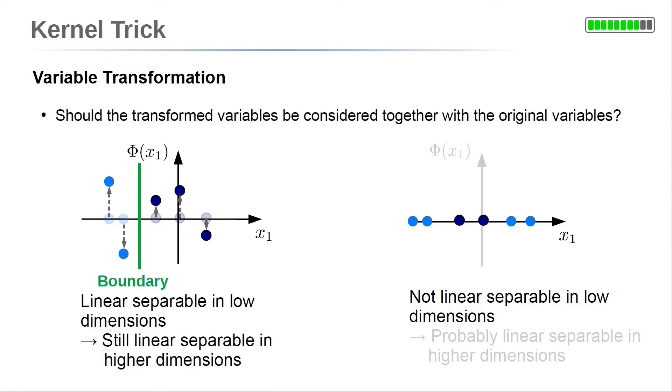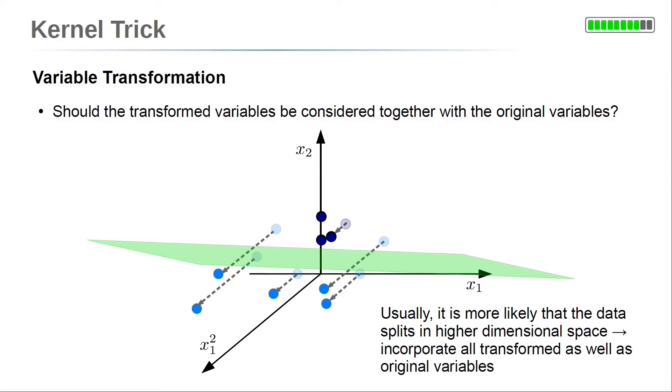Next, we take a look on the right side. In this example, the classes are not linear separable. Again, we can apply a variable transformation. A good transformation now allows for separation. But even if not, it is no disadvantage to incorporate the original variables. In total, usually, it is more likely that the data splits in higher dimensional spaces. So, to incorporate all transformed, as well as the original variables, is very beneficial.